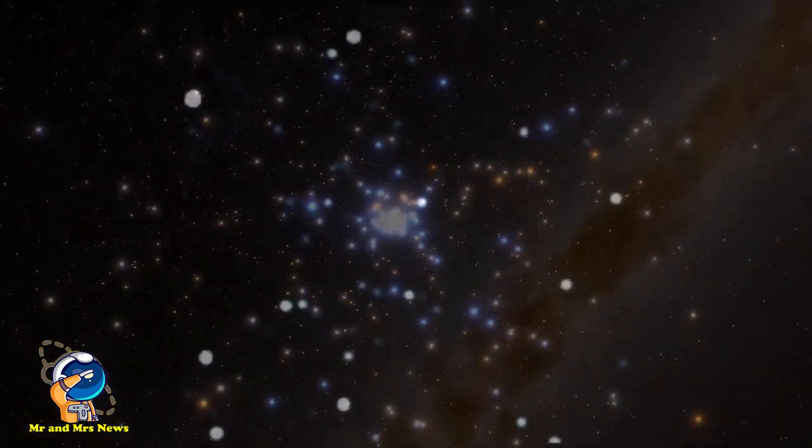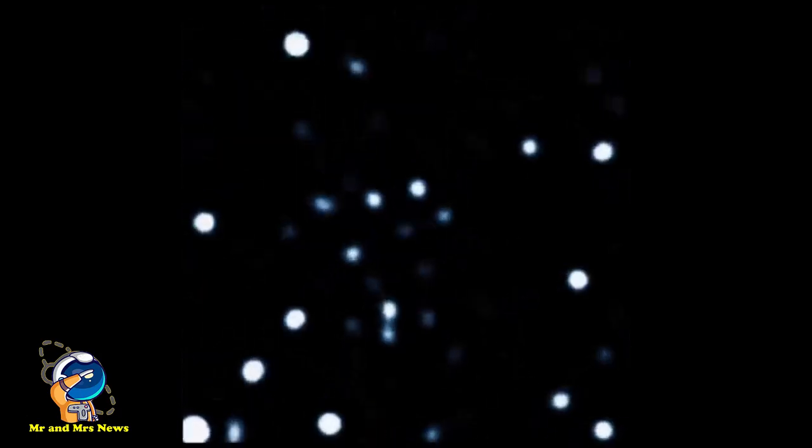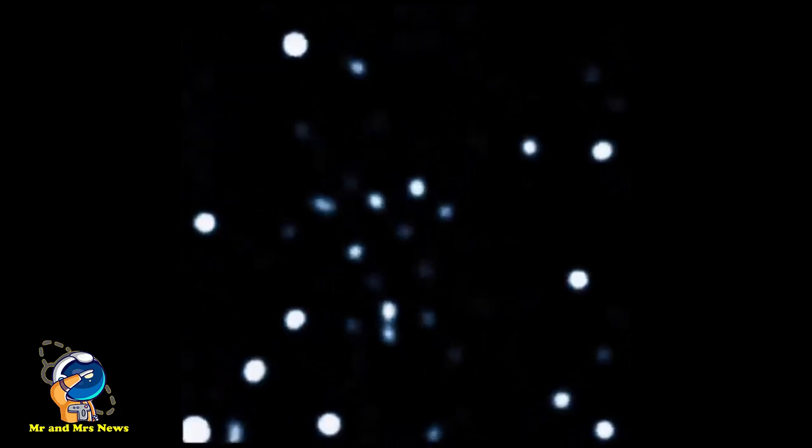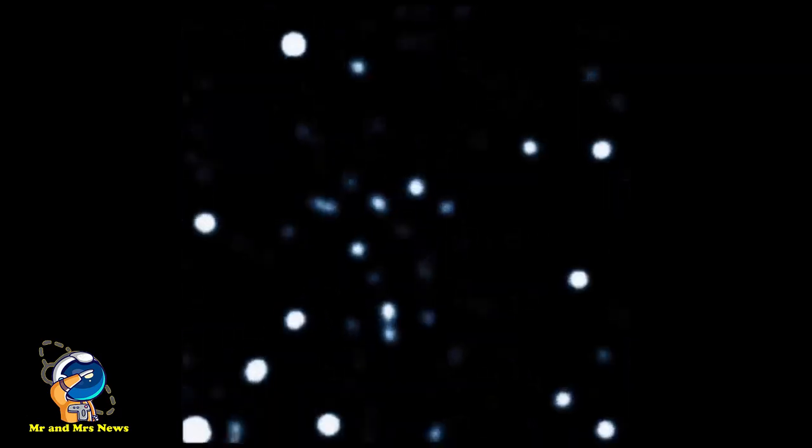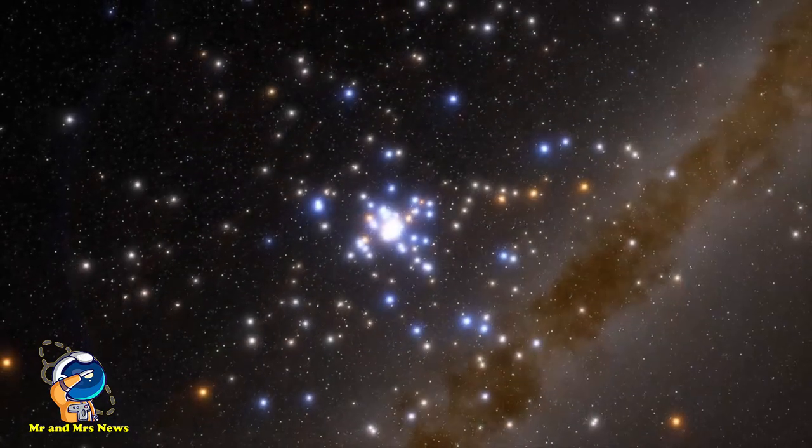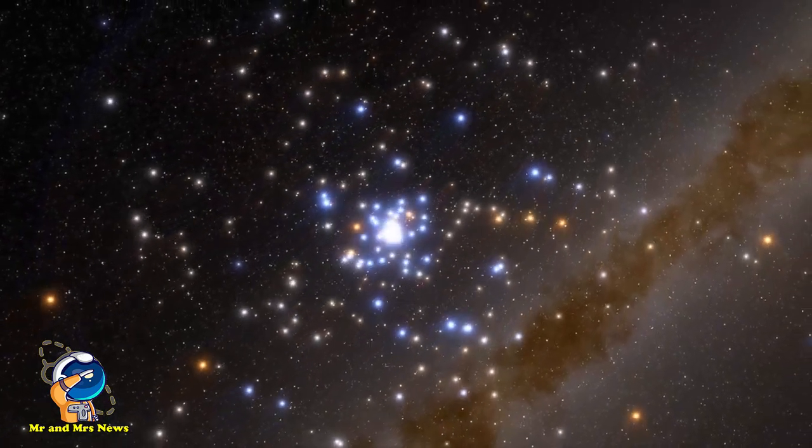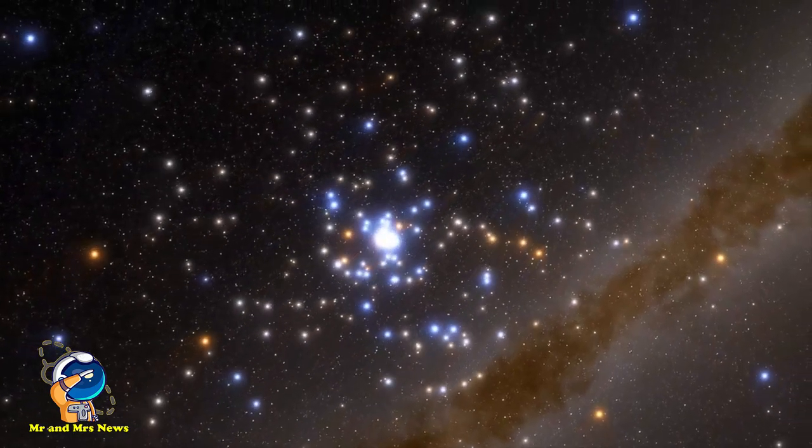Selama mengorbit lubang hitam yang diperkirakan berdiameter 23,5 juta kilometer itu, bintang S4716 bahkan mampu mendekati Sagittarius A hingga hanya bergerak sejauh 150 juta kilometer. Meskipun ini mungkin tampak sangat jauh, namun jarak tersebut relatif dekat dalam istilah kosmik.